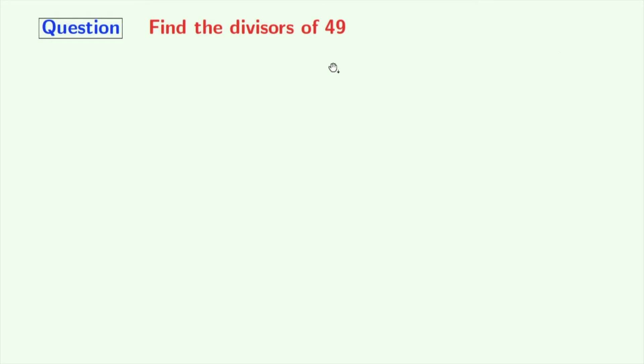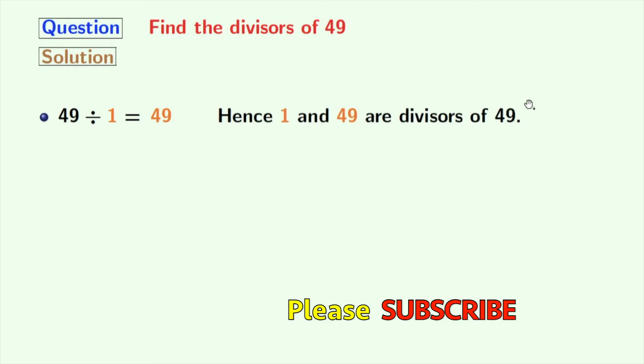Now let's start. Firstly, we will find all the possible ways in which we can divide 49. Let us start from 1. 49 divided by 1 is 49. Hence, 1 and 49 are the divisors of 49.